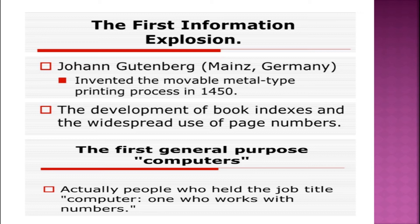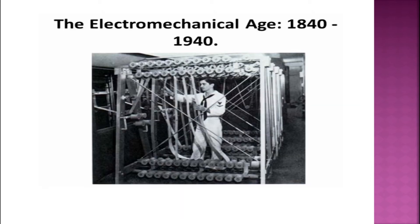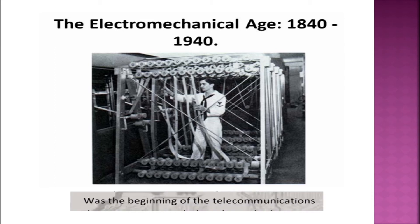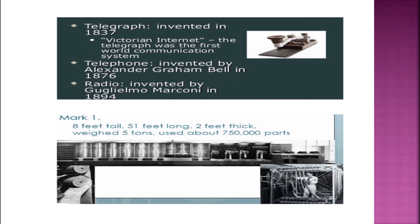The third age was the electromechanical age, which resembles our modern-day technology. It can be defined as the time between 1840 and 1940 AD. Beginnings of telecommunication started in this period. The telegraph was created in the early 1800s, and Morse code was created by Samuel Morse in 1835. The telephone was created by Alexander Graham Bell in 1876. The first large-scale automatic digital computer in the United States was the Mark I, created by Harvard University around 1940.